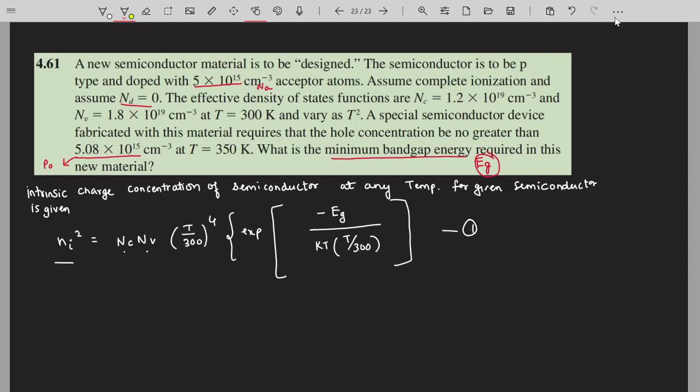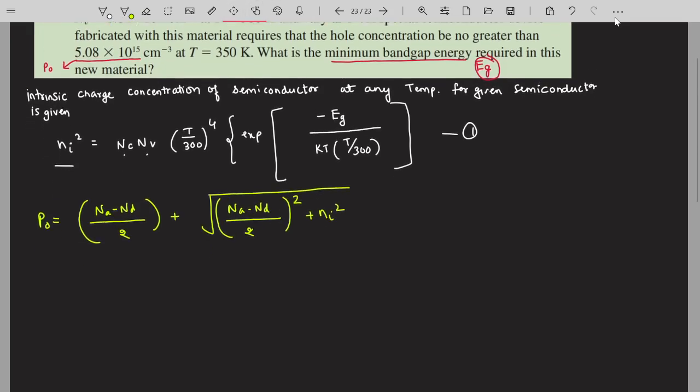We can write: P0 = (Na - Nd)/2 + √[(Na - Nd)/2]² + ni². So we can substitute the values which are available to us.